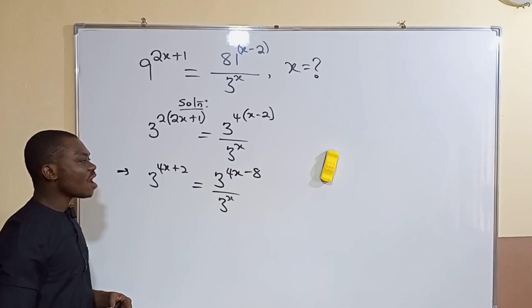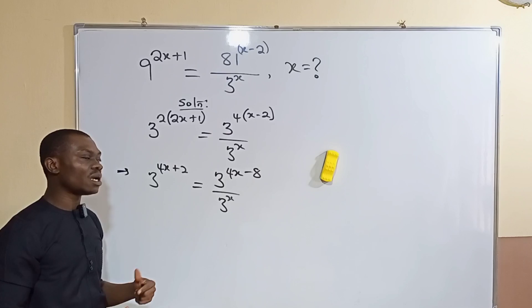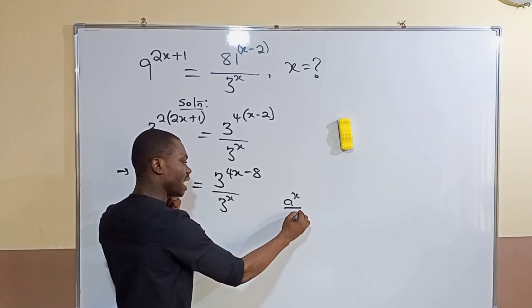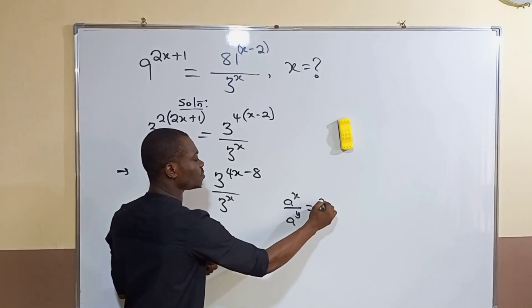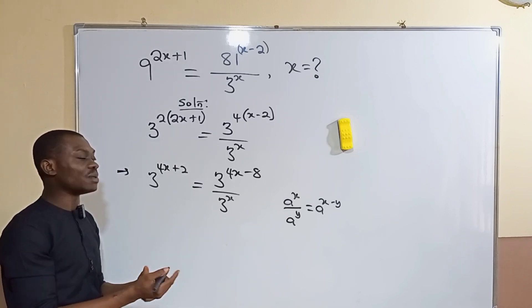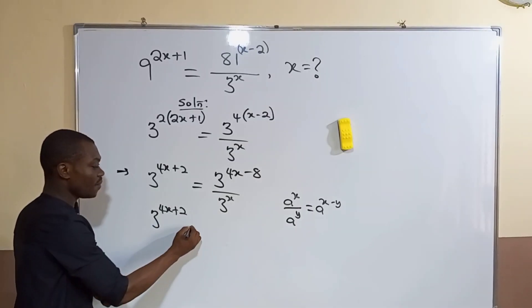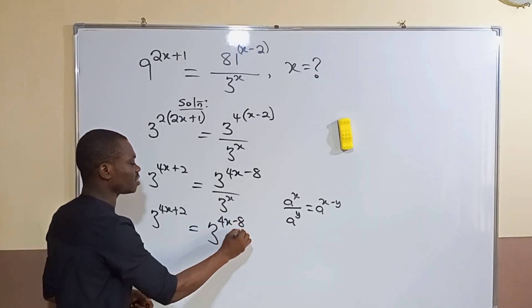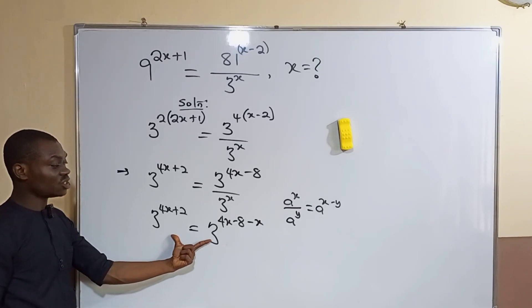Now on this side, how do I make everything to be one index number? You know that there is a rule that told us that if a is raised to the power of x divided by a raised to the power of y—the same base—then you can pick only one base and subtract the powers. Division changes to subtraction, multiplication changes to addition. Your left-hand side is already good, so you're not doing anything to this side. Then this side you pick one base, which is three, and then subtract: 4x minus 8 minus x from it.